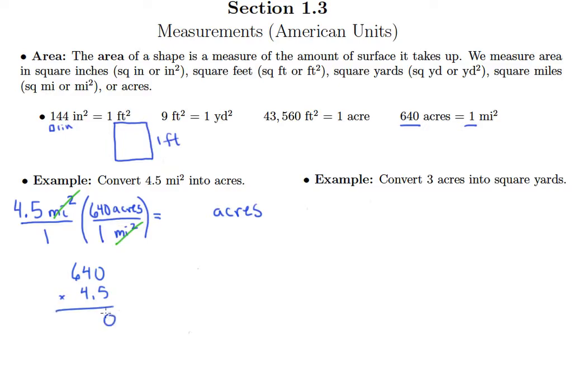Okay, so we can do that real quickly, and so we end up with, have to move that decimal point back one, 2,880. So 4.5 square miles is equivalent to 2,880 acres.